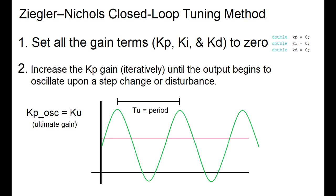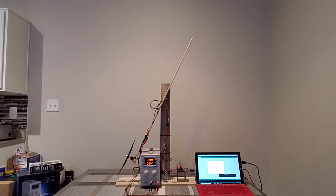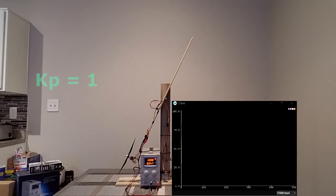Now before we go any further, let's try this method on the propeller arm system and obtain the Ku and Tu values. I've set the derivative and integral gains to zero, and I'm starting up with Kp equal to 1.